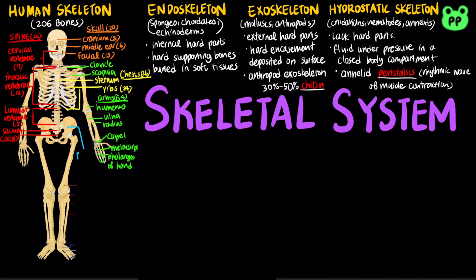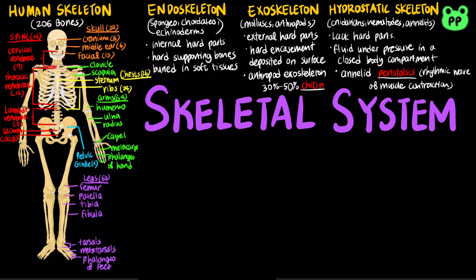The pelvic girdle contains 2 bones. The legs contain 60 bones, including the femur, patella or kneecap, tibia, fibula, and the foot, which contains 52 bones — 26 per foot — including the tarsals, metatarsals, and phalanges of the foot.